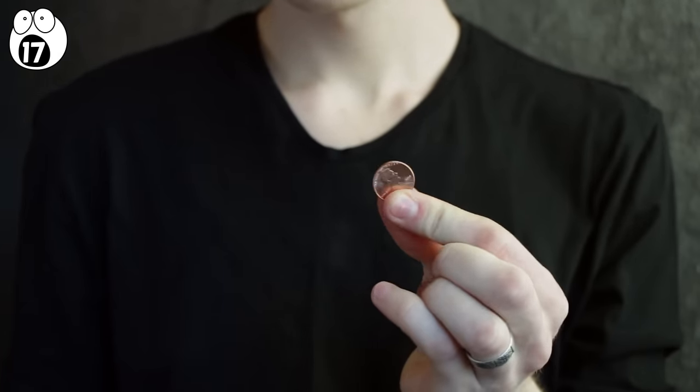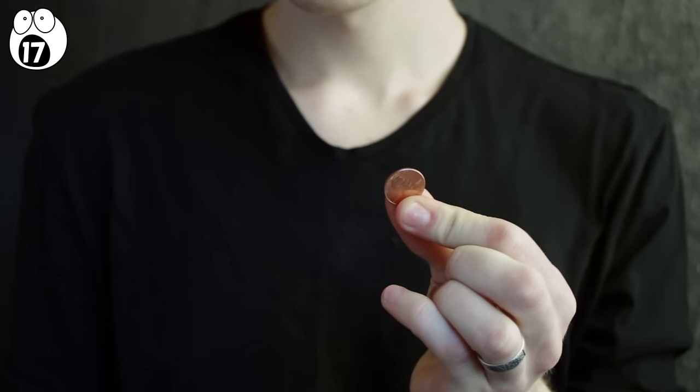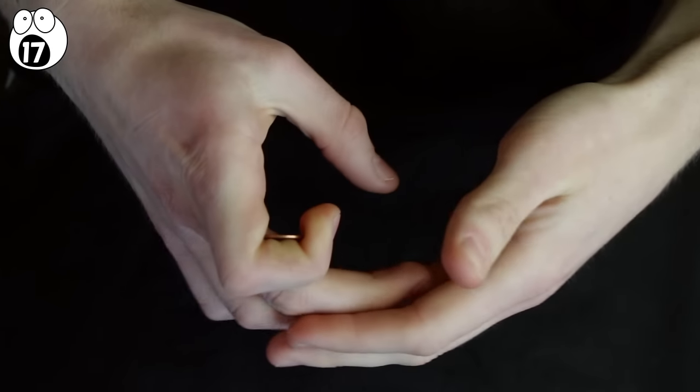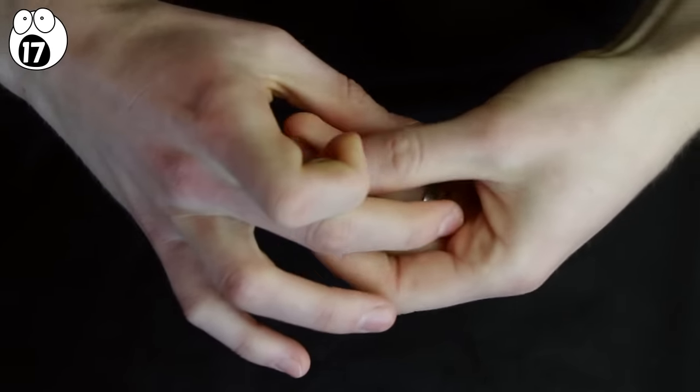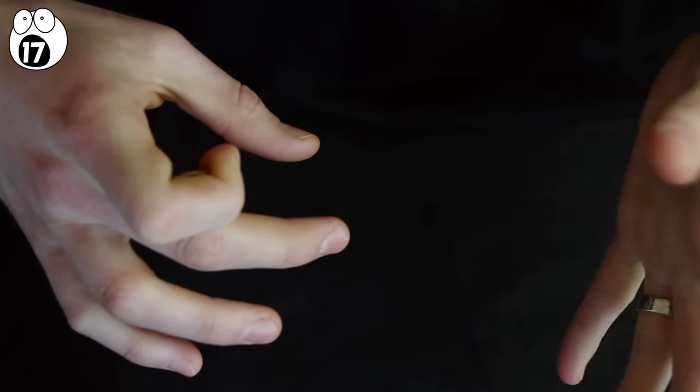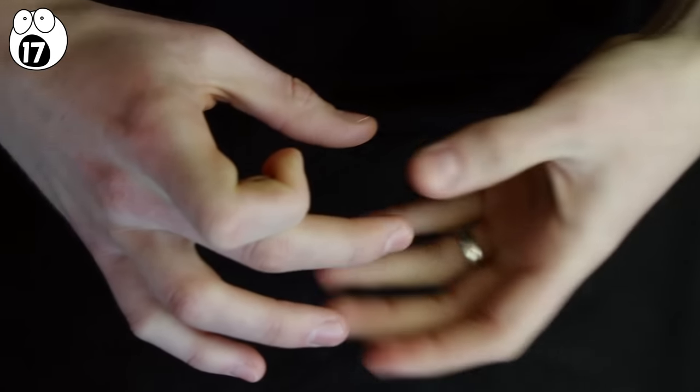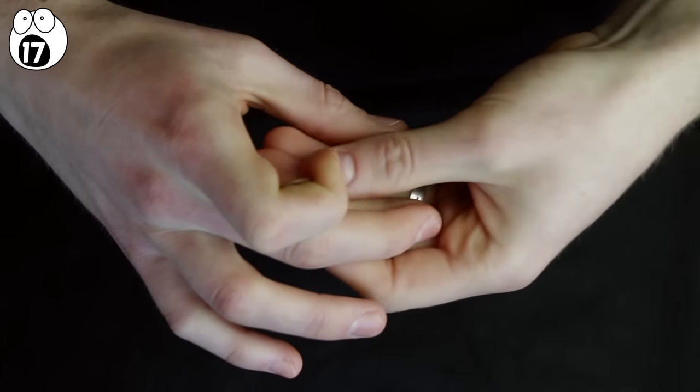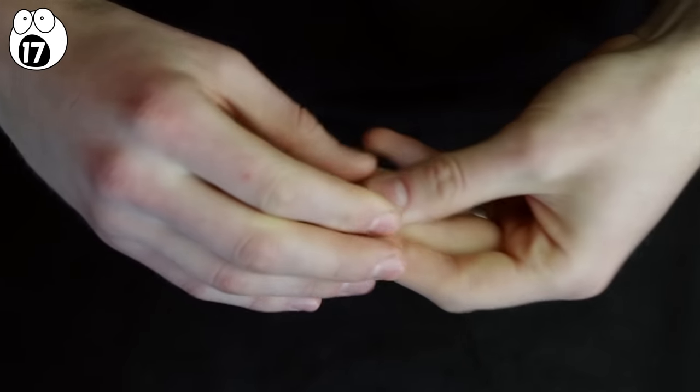As you might have guessed, this involves a little bit of sleight of hand. Once you place your second hand over the one with the coin in it, simply place the coin in between your index finger, holding it there. Now, to make the coin reappear, all you have to do is lift it from your index finger, and show it to your hopefully astonished fans.